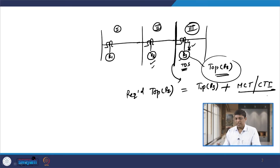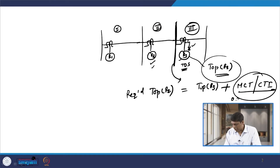This MCT depends on many parameters — for example, the errors in the CT, the errors in the relay, plus some safety margin. Based on all of that, the minimum coordination time interval can be considered in the range of 0.2 to 0.3 second. In this case, we need to add either 0.2 second or 0.3 second, or any value in between, and then decide the time of operation of relay R2.